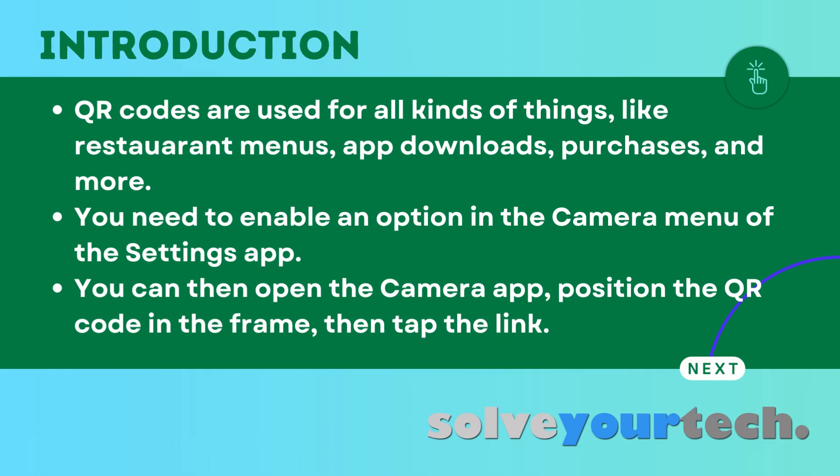Essentially, you need to open your camera app, position the code in the camera window, wait for the app to recognize that it's a QR code and read the data, then display a link that lets you take an action. However, you also need to have a setting enabled in the iPhone camera menu to allow this process to occur.